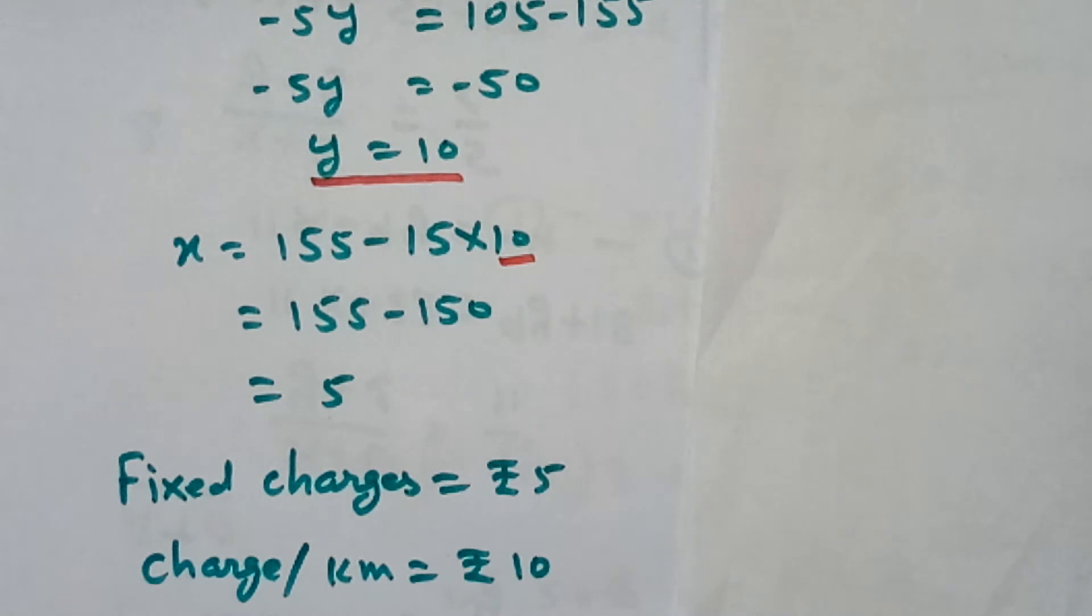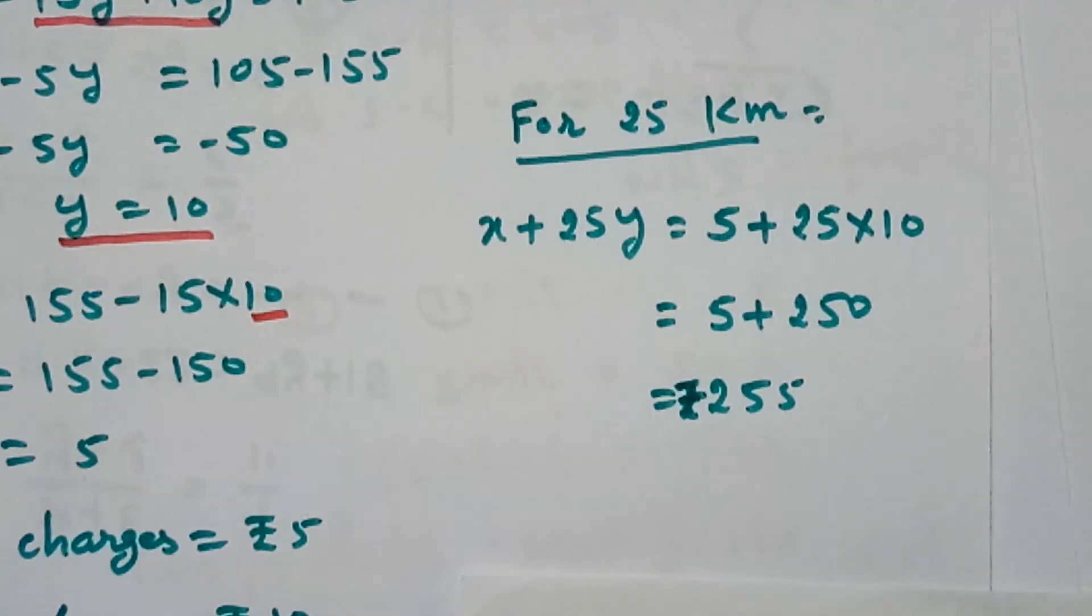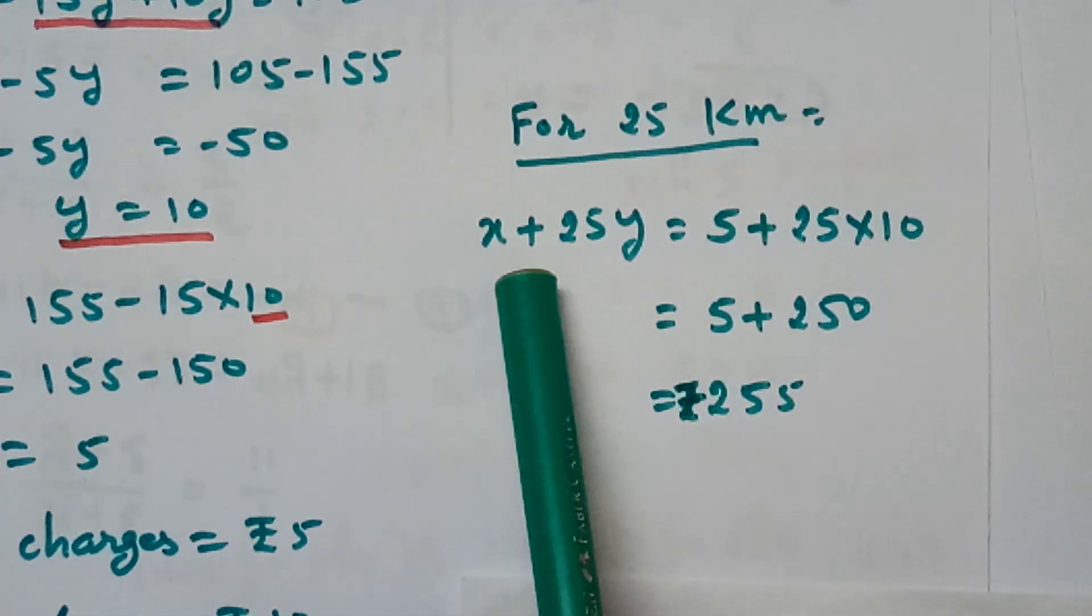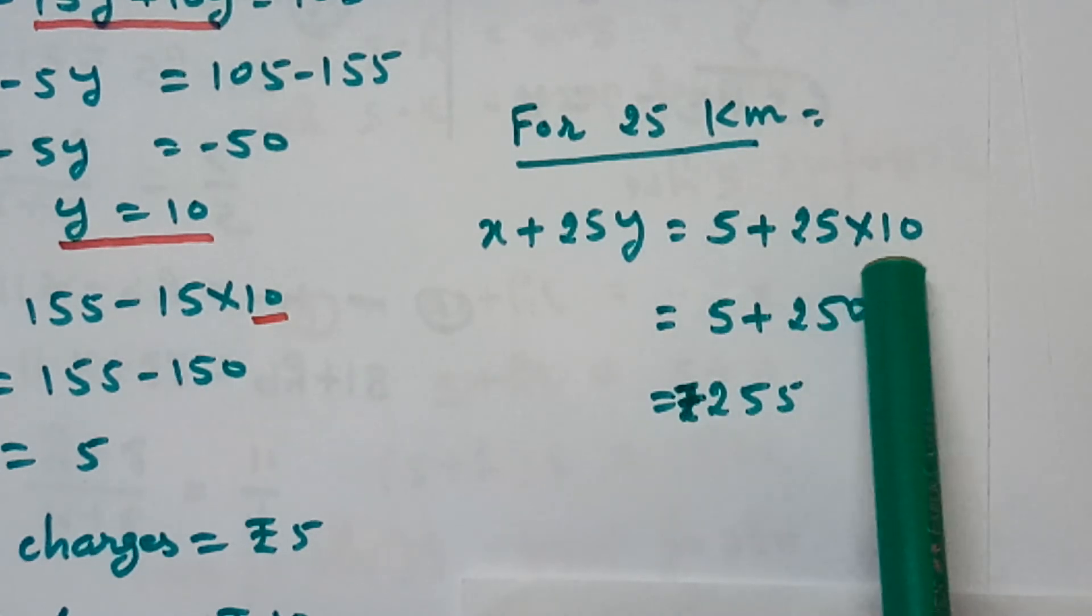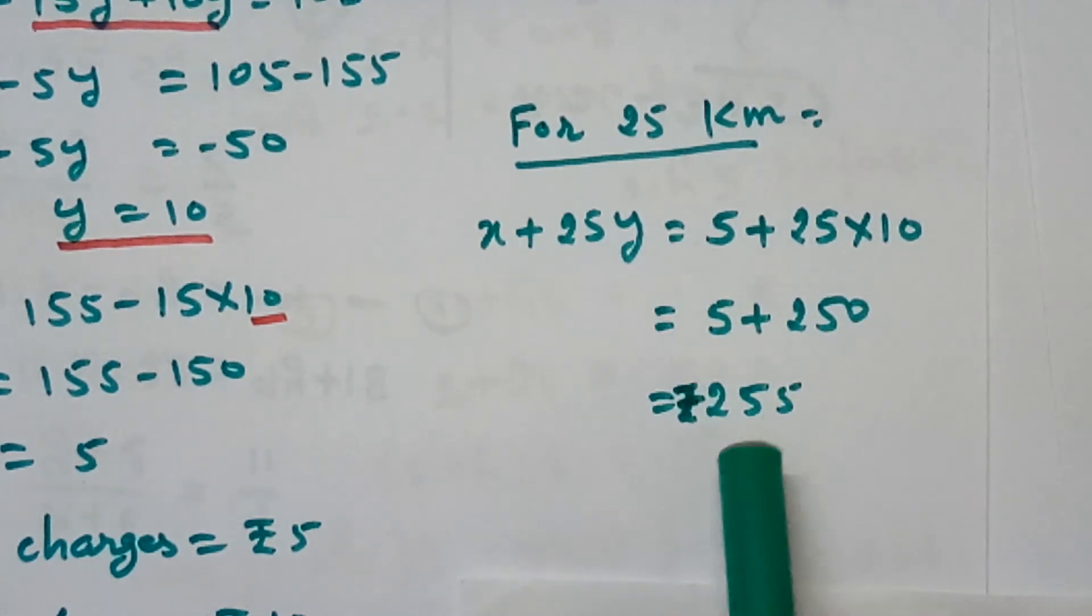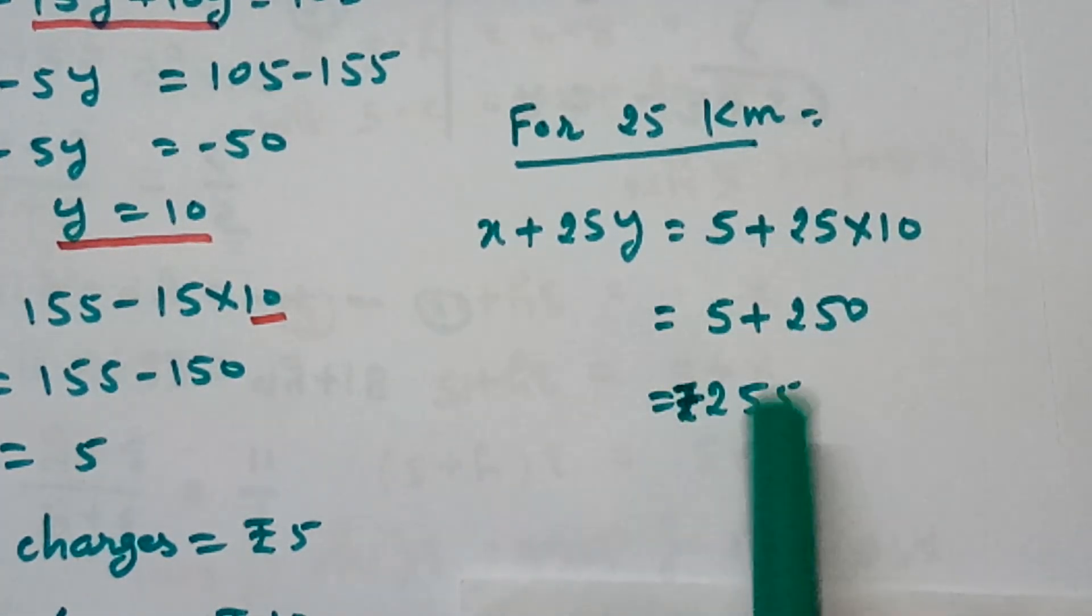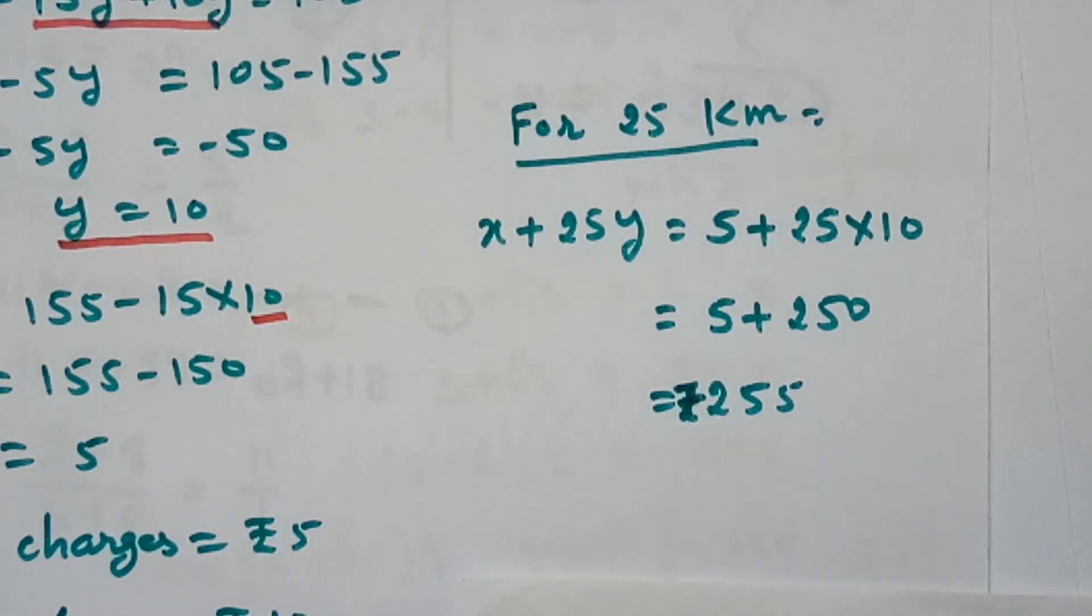Now, the next part of the question is that we have to find the charges for 25 km. For 25 km equation will be x plus 25y. x is 5, y is 10. We have calculated that for 25 km, the person has to pay Rs. 255.